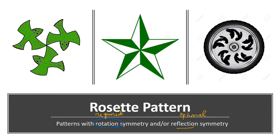These are examples of rosette patterns. As mentioned earlier, this one has a 120-degree rotation symmetry. This one has one, two, three, four, five — so that's 360 divided by 5, which is 72 degrees. And this one also has a rotation of 72 degrees. So they are all examples of rosette patterns.